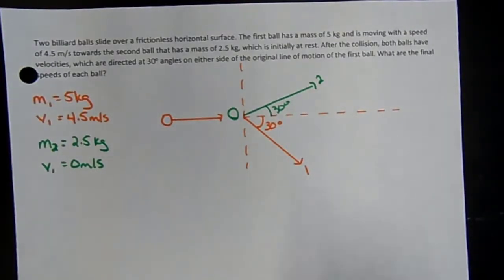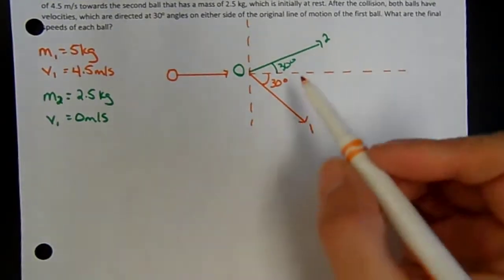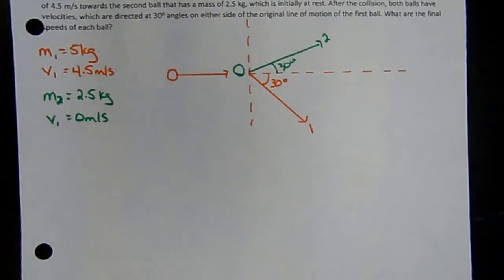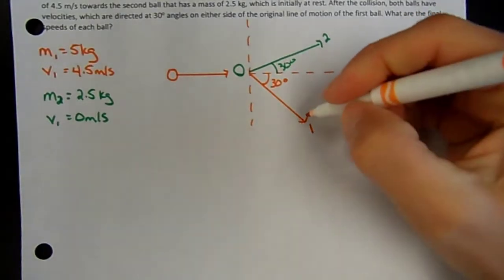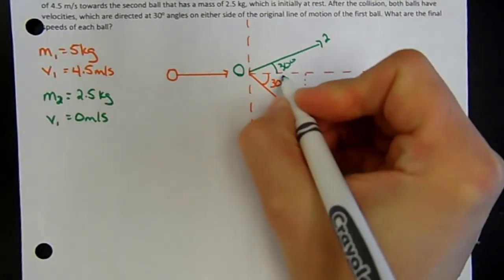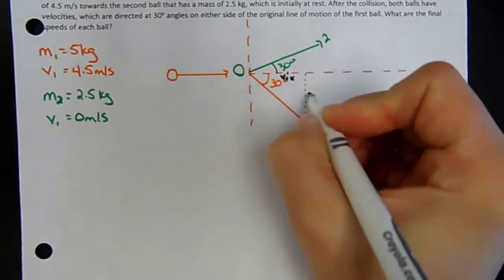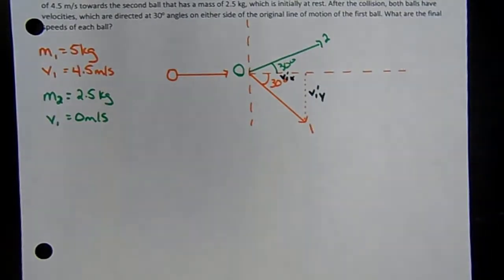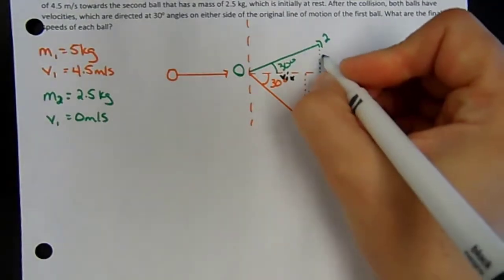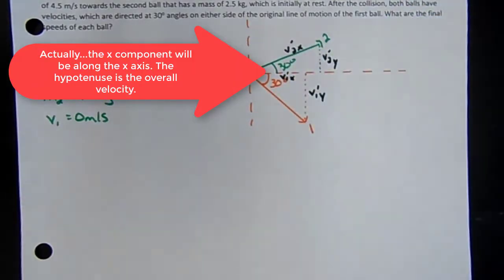What we want to know is the velocity of each ball. This gets a little complicated because we now have velocity in the x-direction and velocity in the y-direction for both ball one and ball two. We need to resolve these into components. The velocity of ball one has an x-component and a y-component, and so does ball two.